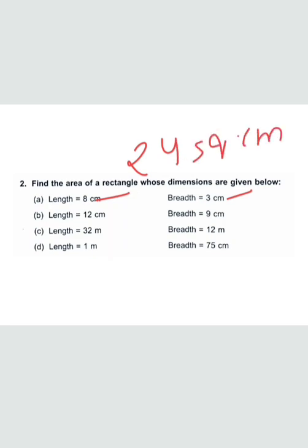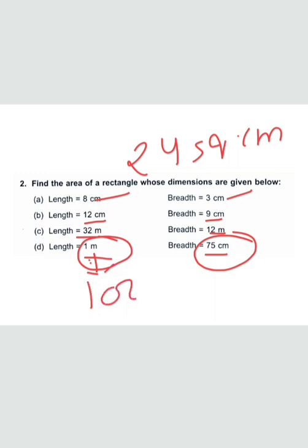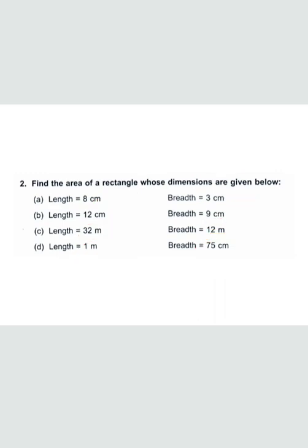In part B, we multiply 12 by 9. In part C, we multiply 32 and 12. In part D, we multiply 1 meter and 75 centimeters. But in part D, since we have both meters and centimeters, we first convert meters to centimeters: 1 meter equals 100 centimeters, so 100 multiplied by 75 will be the answer.